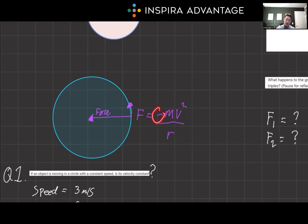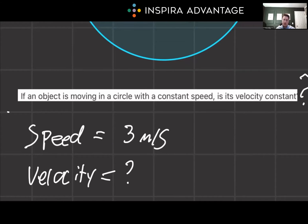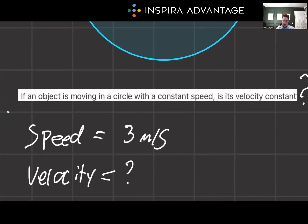Note that the negative sign indicates the direction of the force toward the center of the circle, which makes sense — if you're spinning around in a circle, there's a force pulling inward. Quick concept check: if an object is moving in a circle with constant speed, is its velocity constant? Speed? Sure, it's constant — let's say three meters per second. But the velocity will be changing because it's going in a circle, meaning displacement is constantly changing direction.